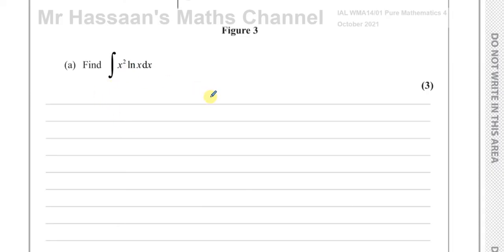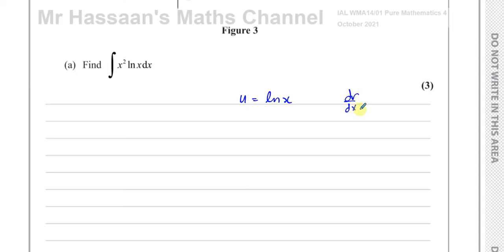When we're integrating by parts, we normally choose the x term — like the x squared term — as our u, because that breaks down when we differentiate it. But when you have ln x, that takes precedence, because when you differentiate that it also breaks down very easily. So whenever you have ln x, it's easier to take ln x as your u, and we're going to take dv/dx as our x squared. Because when we find the differential of ln x it becomes 1 over x.